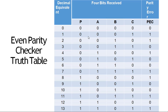जो 4 bit receive हुई है — 0, 0, 0 — यह सही है। Even parity checker की truth table देख रहे हैं: यह even है तो 0 आएगा। अगर error है, यहां एक ही 1 आया है, तो इसका मतलब error है, तो 1 show कर रहा है, क्योंकि parity checker 1 show करता है मतलब कि वहां कुछ error है, तभी parity checker में 1 आएगा।